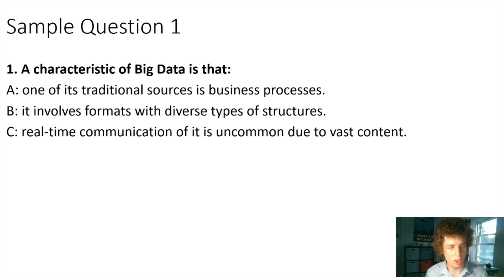I've gotten a couple practice questions from the link in the description. First one: a characteristic of big data is, well, one of its traditional sources is business processes - not necessarily true. I think it's a lot of social media. It does involve formats with diverse types of structures. Remember, keep in mind this idea of unstructured text is able to be understood by big data and artificial intelligence. It may not be data in a structured table, but it is still how we think of data. Real-time communication is common, that's not true. So the answer is B.